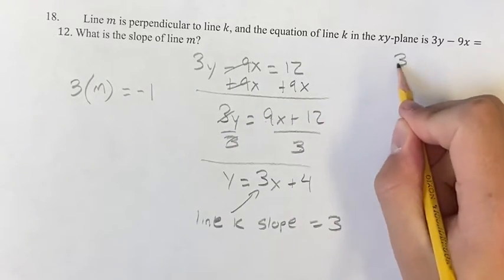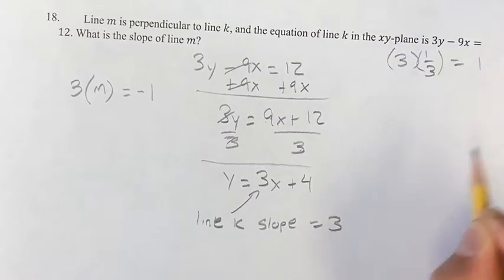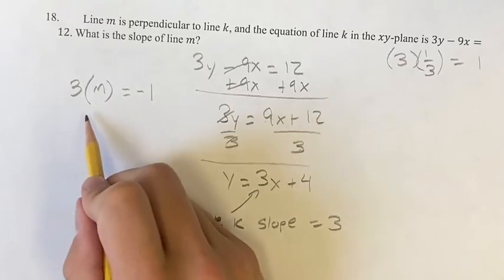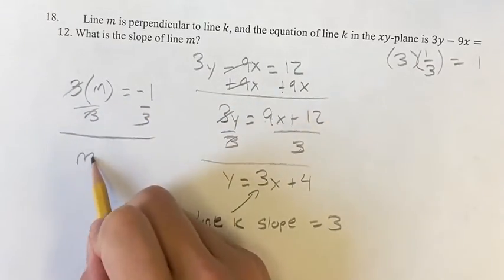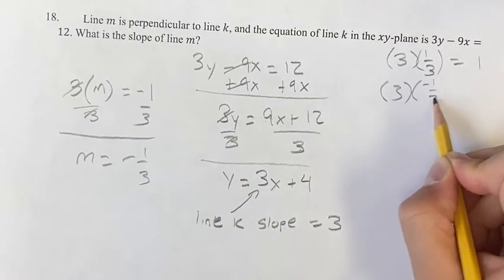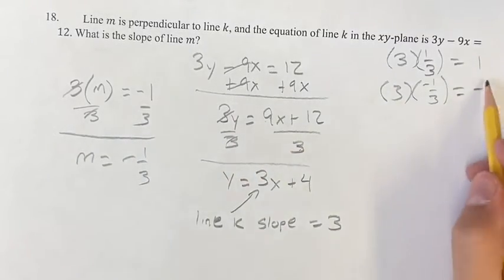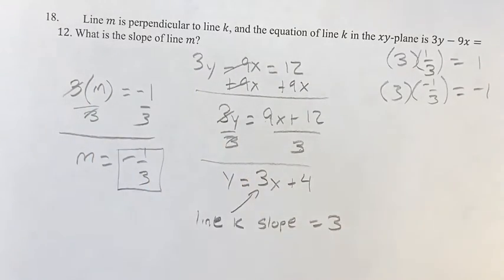So 3 and 1/3 would be reciprocals because they multiply to 1. Here, if we're dividing both sides by 3, we find that m is equal to negative 1/3 because 3 times negative 1/3 is equal to negative 1. That's why it's a negative reciprocal. The slope of line m is negative 1/3, that's going to be your final answer.